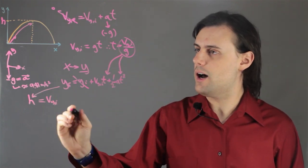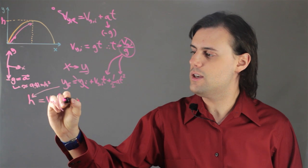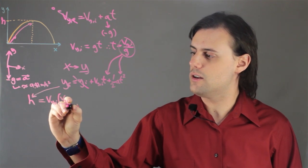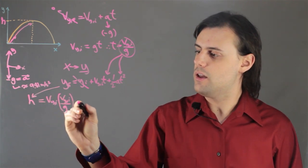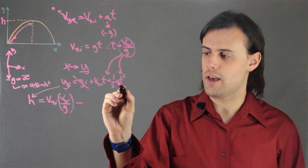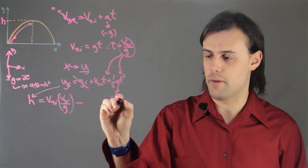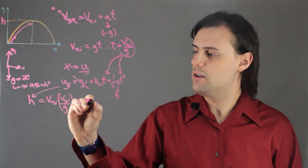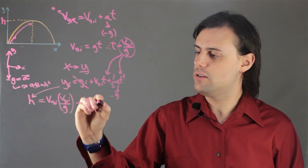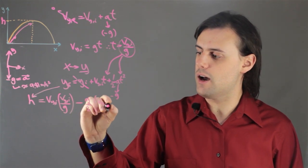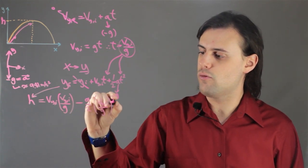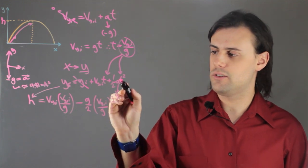So I have v_y i times v_y i divided by g. And then I have minus, because the a, again, is minus g. I have minus g over 2 times v_y i over g squared, because this time is squared.